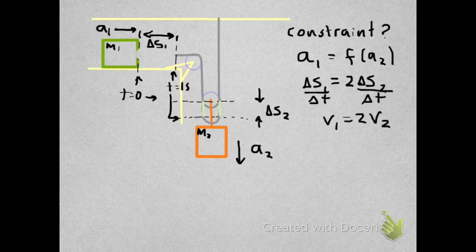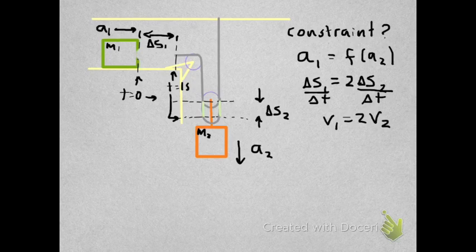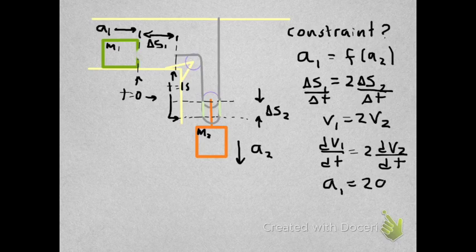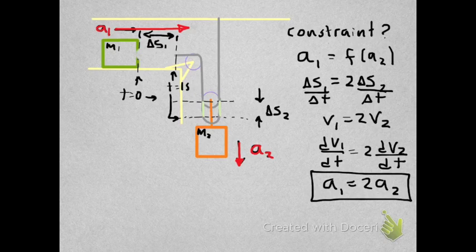If that's how the distances are related, we immediately obtain that the velocity of block 1 should be 2 times the velocity of block 2. And taking the derivative, we arrive at A1 equals 2 times A2. So block 1, the horizontal one, accelerates at a rate that is 2 times the acceleration of block 2.